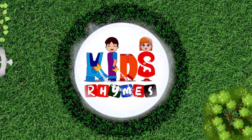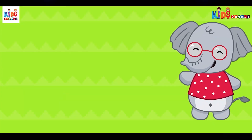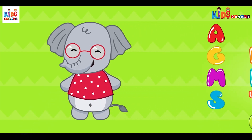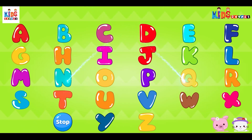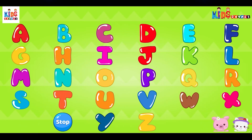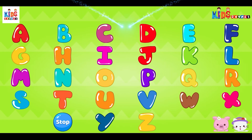It's time! Hi, I am Ellie. Let's tap these letters together: A, B, C, D, E, F, G, H, I, J, K, L, M, N, O, P, Q, R, S, T, U, V, W, X, Y and Z. Now I know my ABCs.